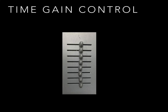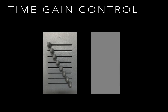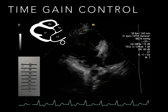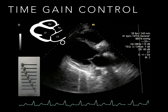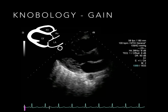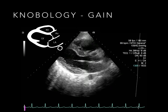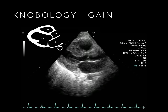Here the image is too bright, or over-gained, near the probe, and too dark, or under-gained, at depth. We correct that by adjusting the TGC. Here on an echo loop, we see the effect of turning up the gain in the far field. Sometimes you need to increase the near-field gain instead, as demonstrated here with a very bright pericardium and reflective lung tissue.